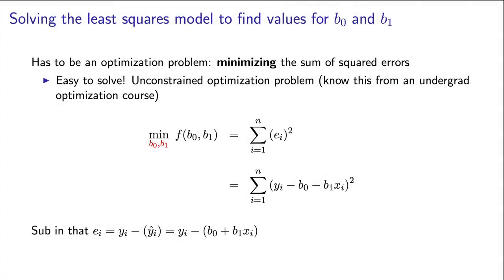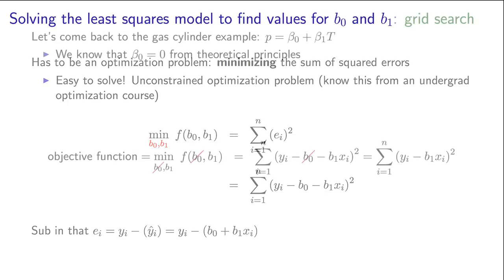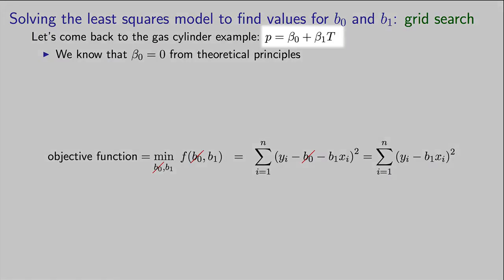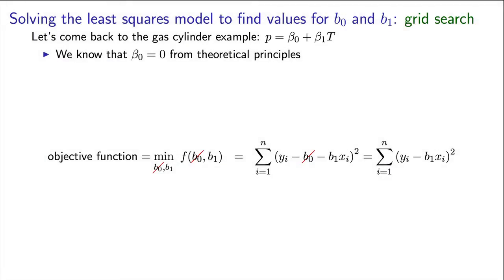Now I'd like to interpret this with an example that we've looked at before. Let's go back to the gas cylinder example, where the pressure was related to the temperature, using a least squares model with intercept beta0 and slope beta1. We know that beta0 is zero from theoretical principles.